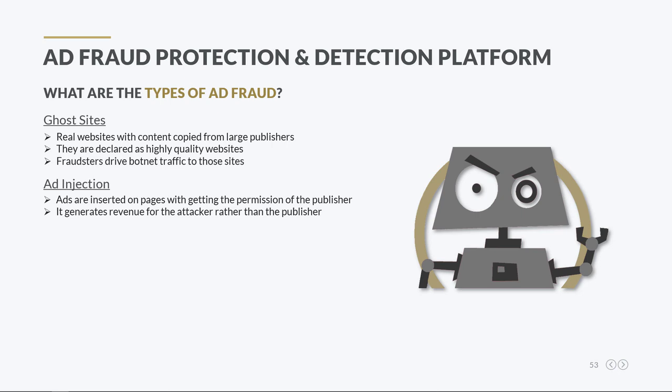Ad injection occurs when a piece of software such as malware, adware, or browser add-on inserts ads in webpages without getting the site owner's permission. Ad injection can happen in three ways: by adding an advert on top of the original ad, by replacing the original ad, or by showing them in places they weren't supposed to be displayed. In short, ad slots get hijacked and start generating revenue for the fraudster rather than the publisher.